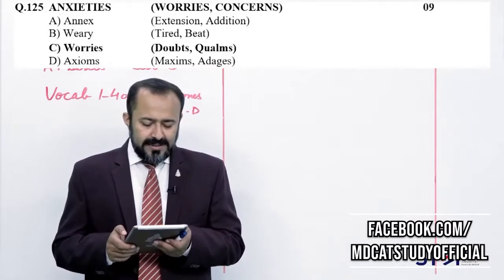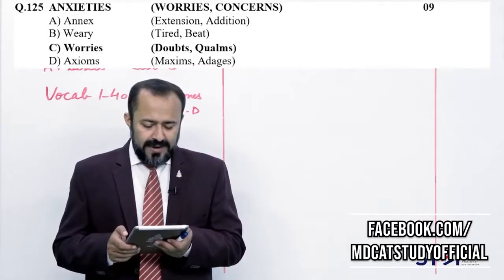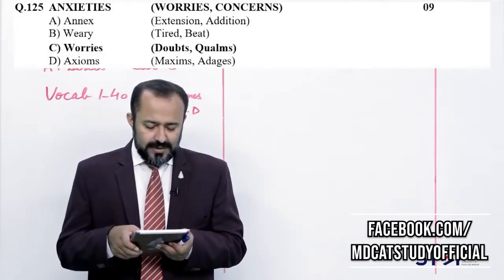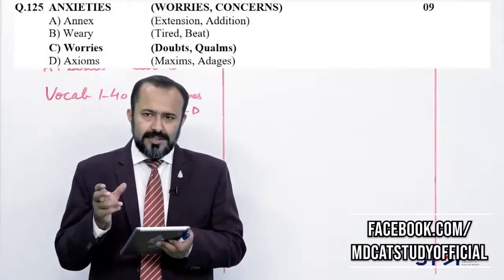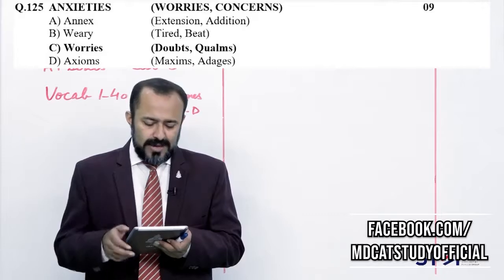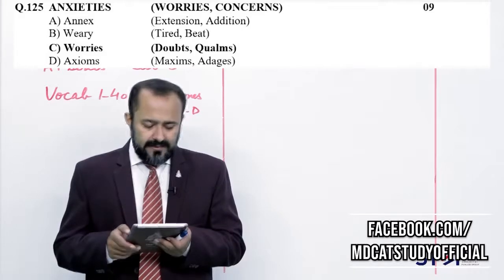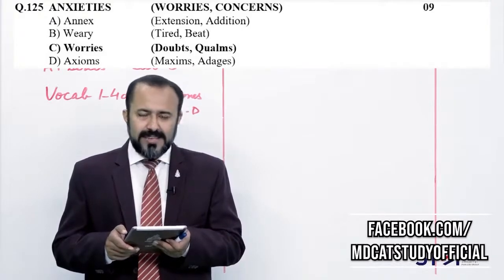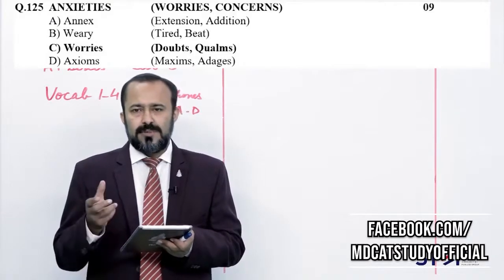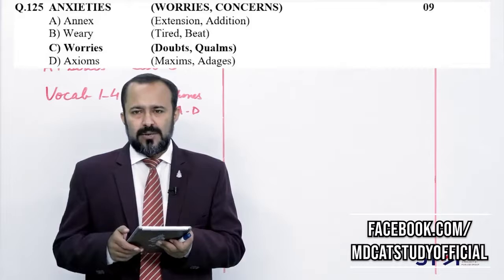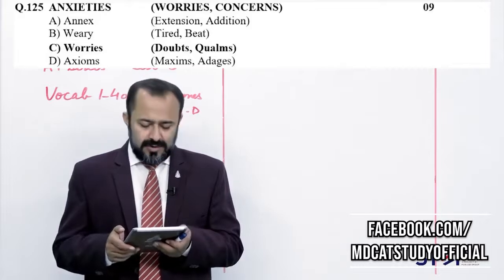Question 125: anxieties — worries کو کہتے ہیں، Charlie correct answer ہوگا۔ Annex — کسی چیز کو اپنے ساتھ جوڑ لینا۔ Alpha — بہت تھکا ہوا۔ Axioms — ضرب المثال، idioms وغیرہ کو کہتے ہیں۔